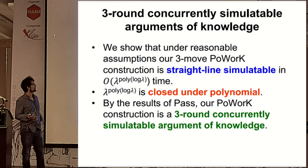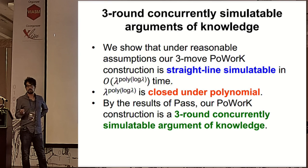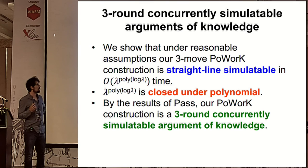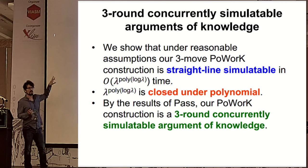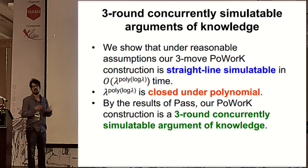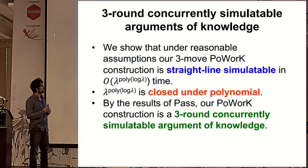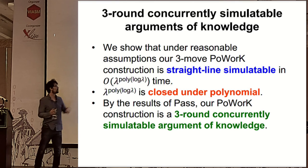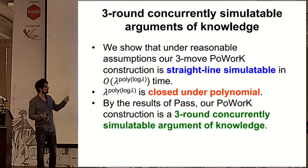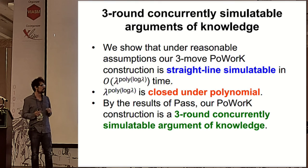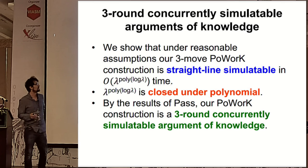For the theoretical application, we use results from Pass to show that under reasonable hardness assumptions for our puzzle, our PoWoK construction is straight-line simulatable. Since this is closed under a polynomial class with λ · poly(log λ) time, we plug in Pass's results and obtain a three-round concurrently simulatable argument of knowledge — reducing by one round the four-round construction for the same primitives that the original Pass paper required.